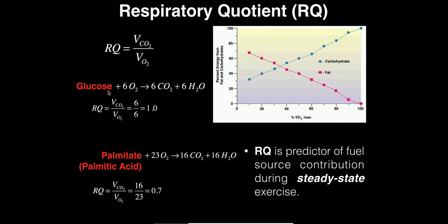If we take a molecule of glucose, we'd have to consume six molecules of oxygen, and we'd get out six molecules of carbon dioxide and six waters. Because this is stoichiometrically accurate — for every one molecule of glucose we consume six molecules of oxygen to produce six molecules of CO2 — we can plug in the stoichiometric coefficients. For VCO2 we use the coefficient six in the numerator, and for VO2 we use the coefficient six in the denominator. Six divided by six is 1.0.